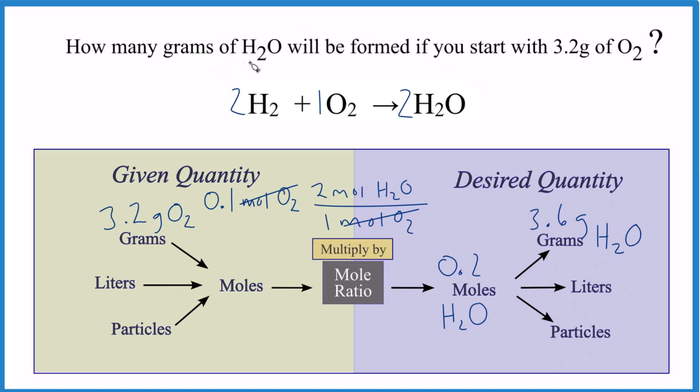It's Dr. B. We're looking at how many grams of H2O will be formed if you start with 3.2 grams of oxygen, and that's an example of a typical stoichiometry problem. Thanks for watching.